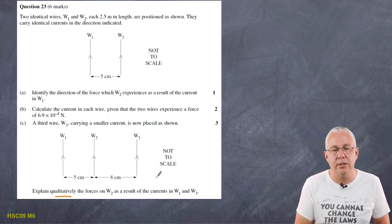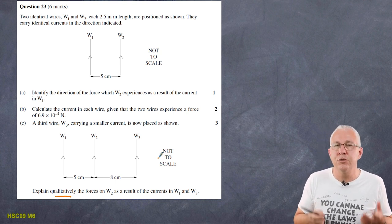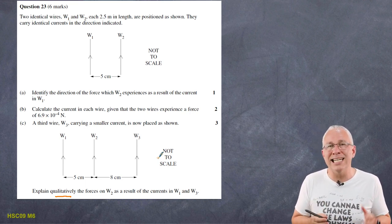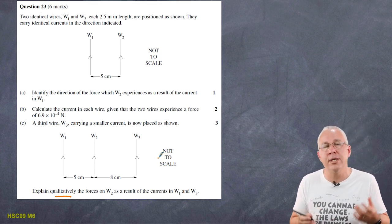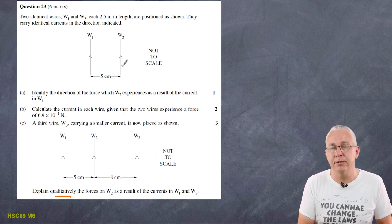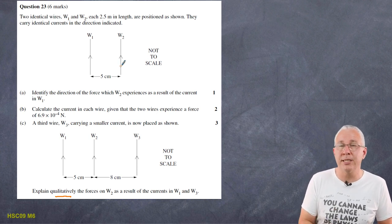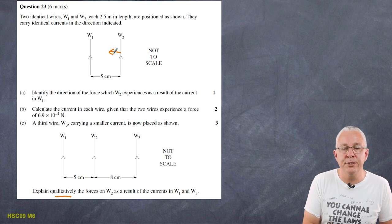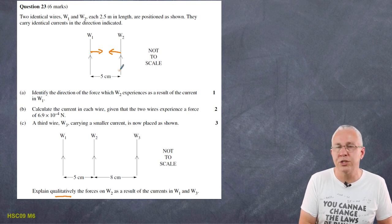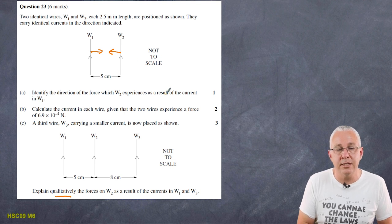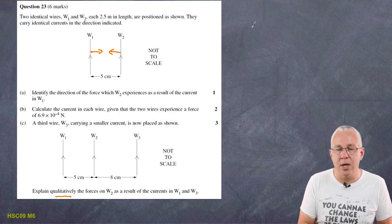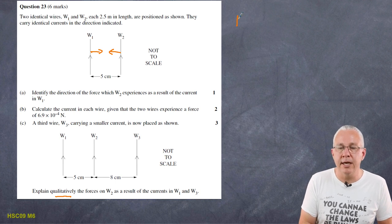This is about forces between current-carrying wires. Each wire sits in the magnetic field of the other, so they apply forces on each other by Newton's third law. Since the two wires carry current in the same direction, they experience a force drawing them together — they attract. The answer for part A is simply that W2 experiences an attractive force toward W1, or that they move toward each other.